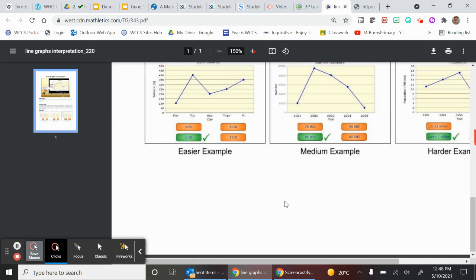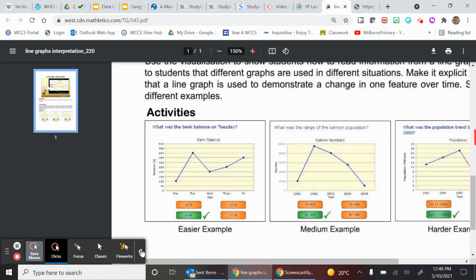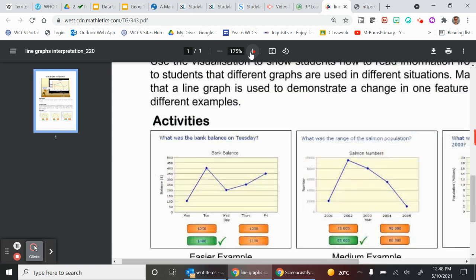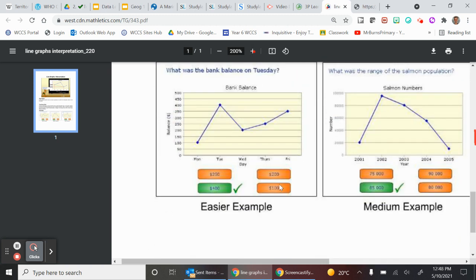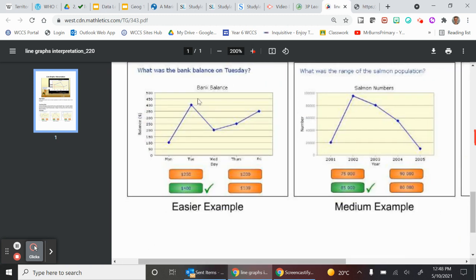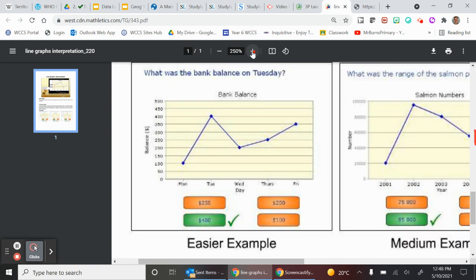Let's go and have a look at a question example. I might stay away from the pen if that's right, I've been having trouble with the pen today. Let's look at what was the bank balance on Tuesday. That just means we go to something like Tuesday.